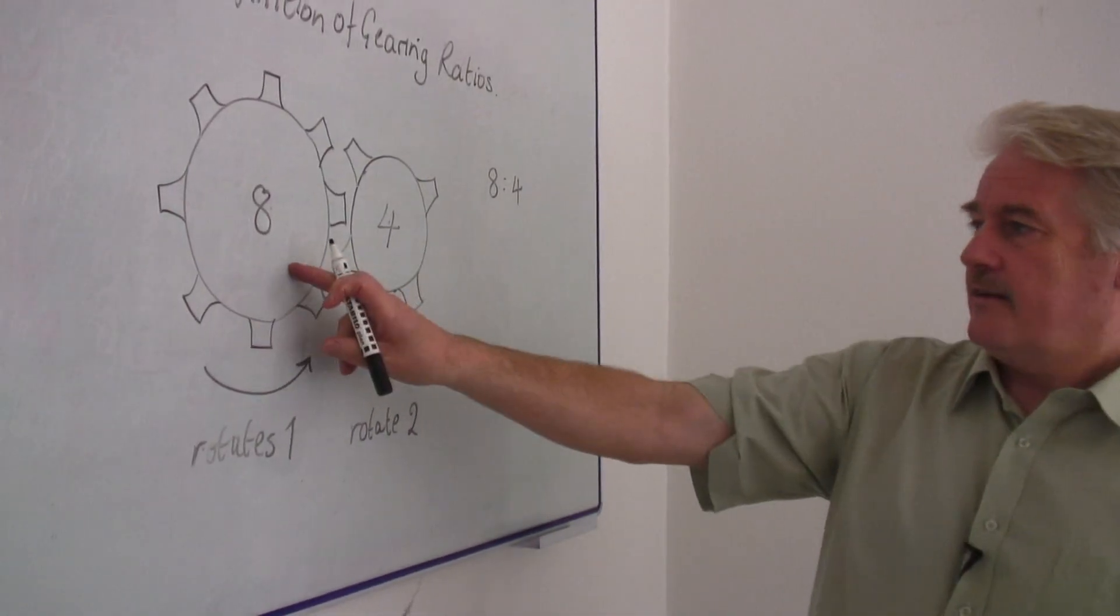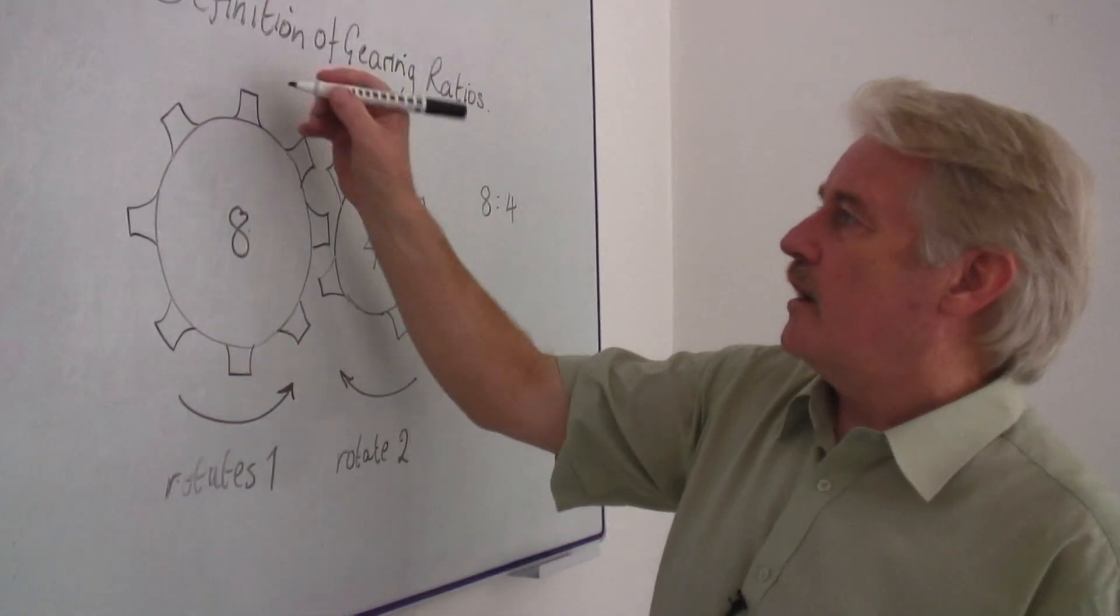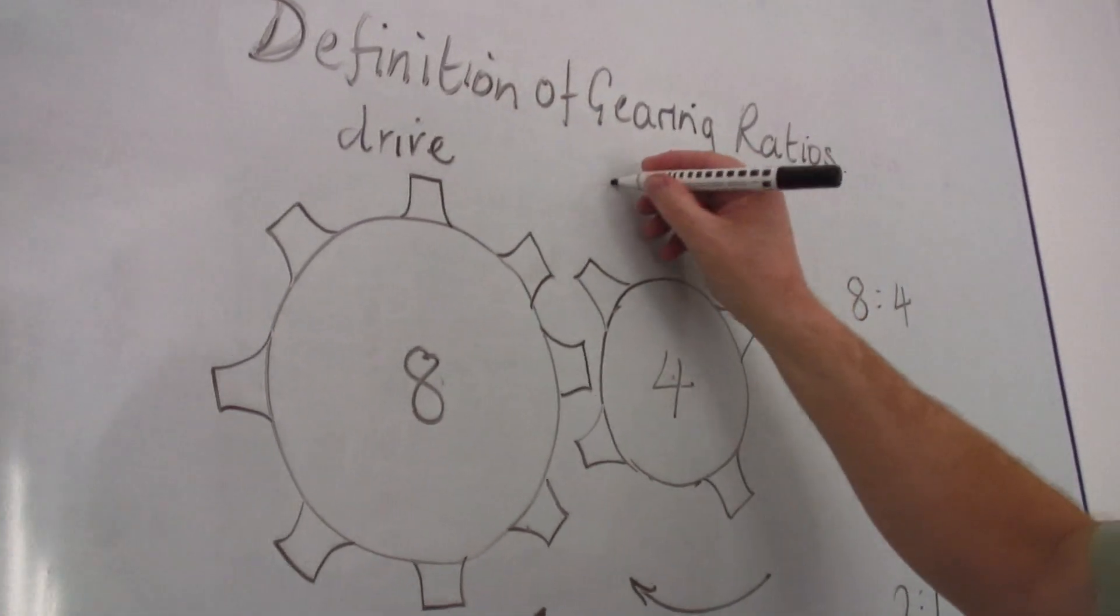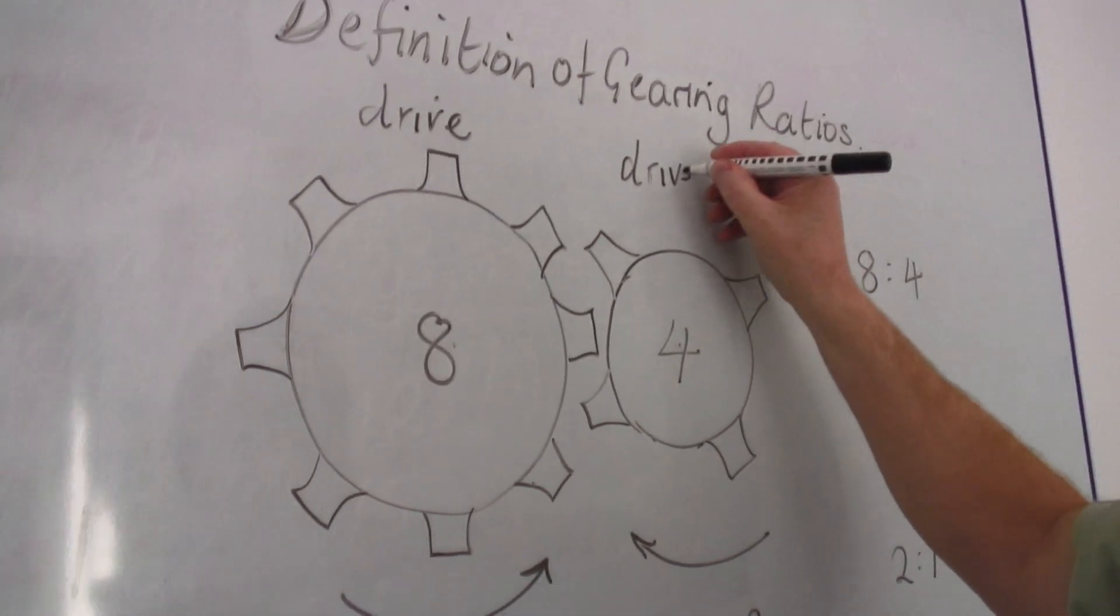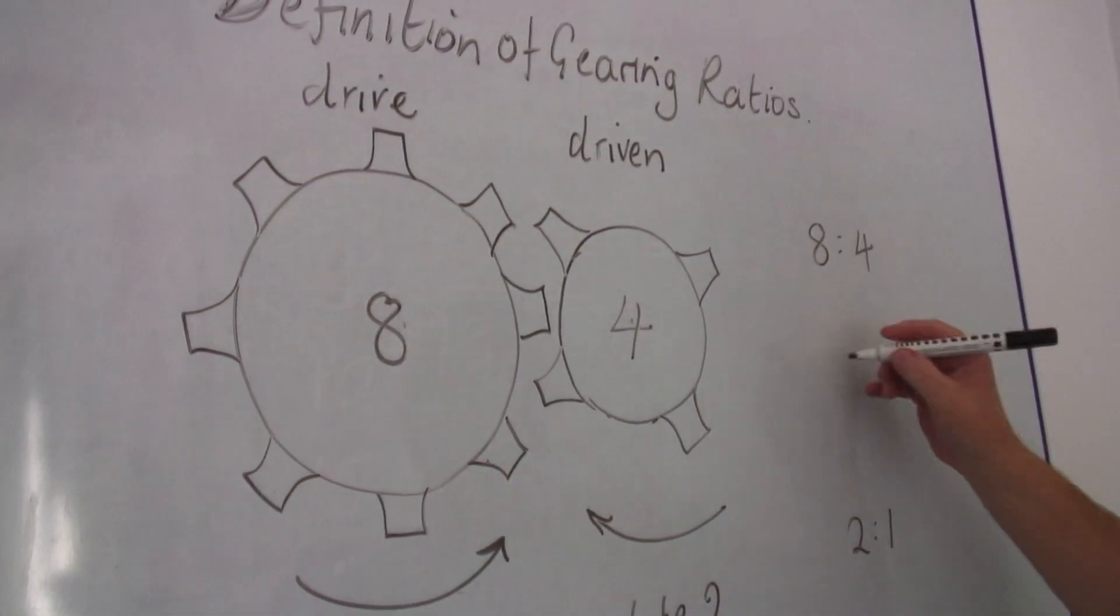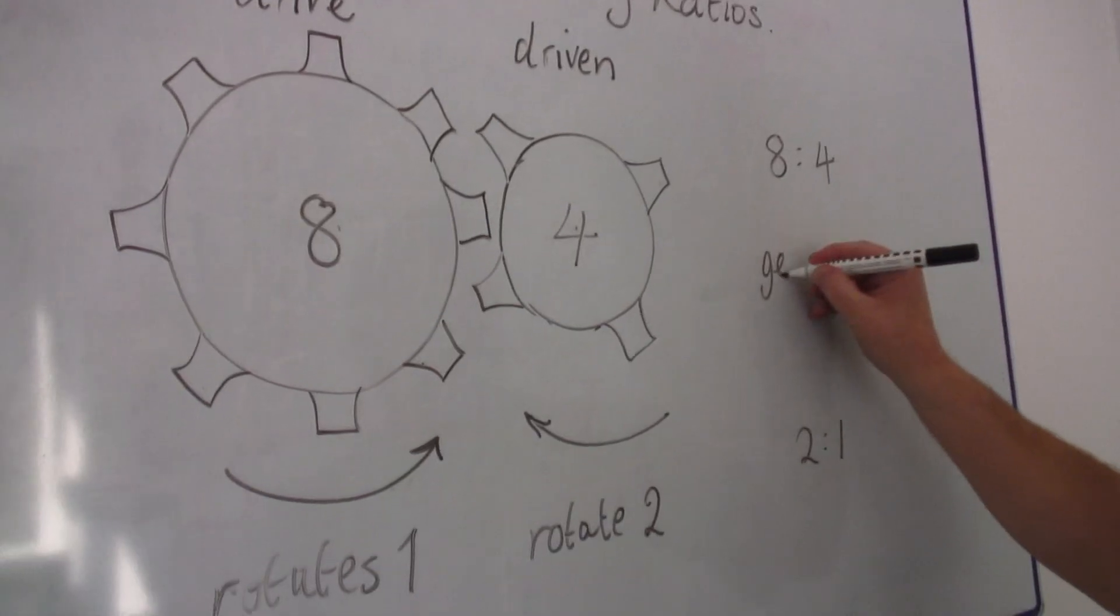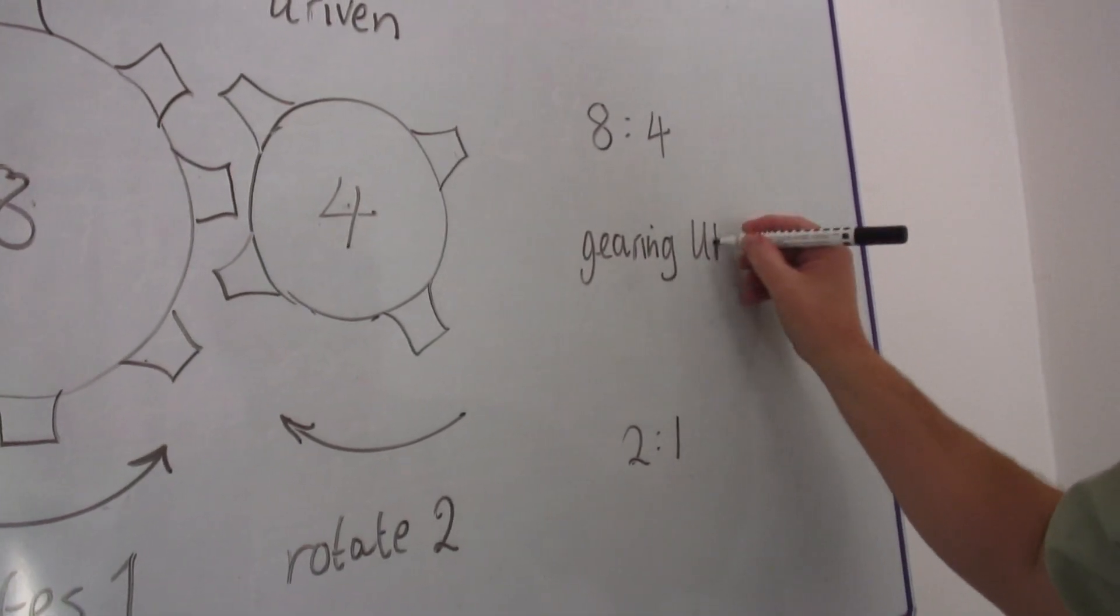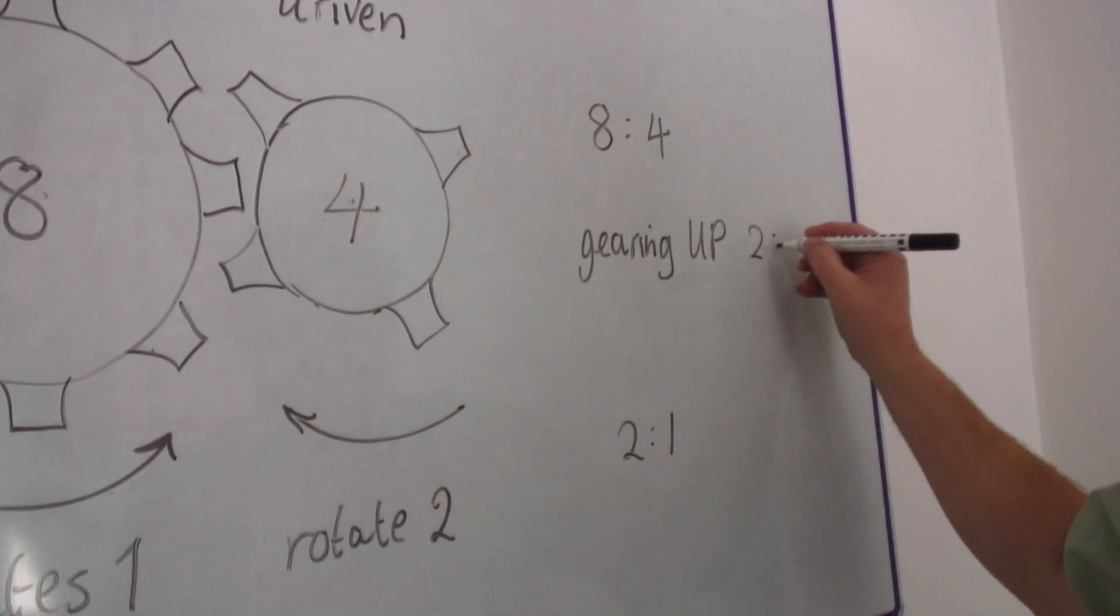We would say that if this is the drive, we'll call this one the drive, and this is the driven gear, then what we've got is a gearing up of two to one.